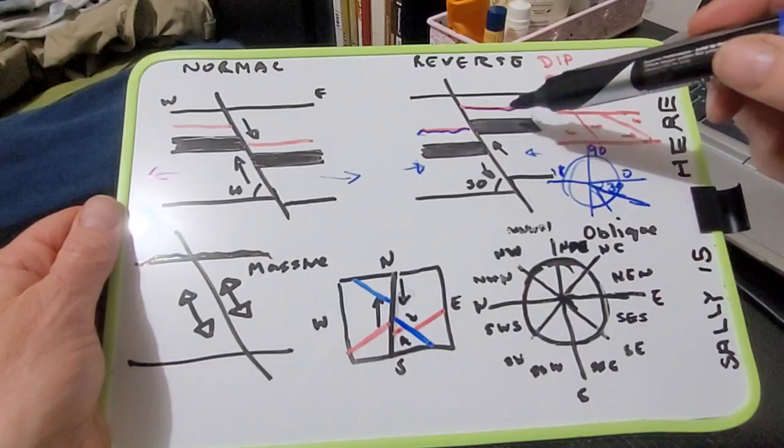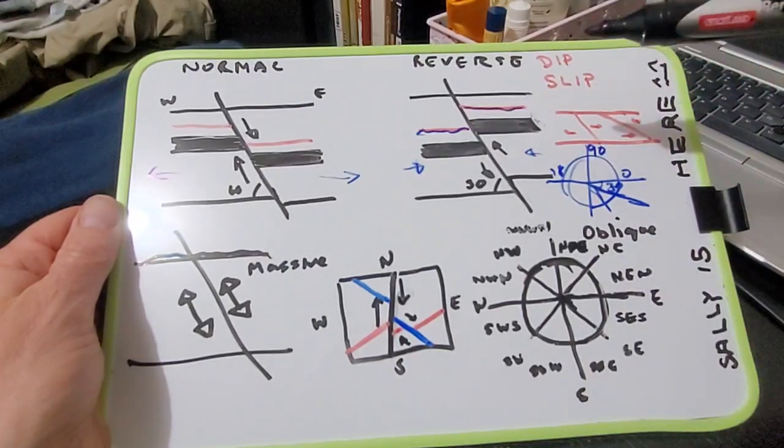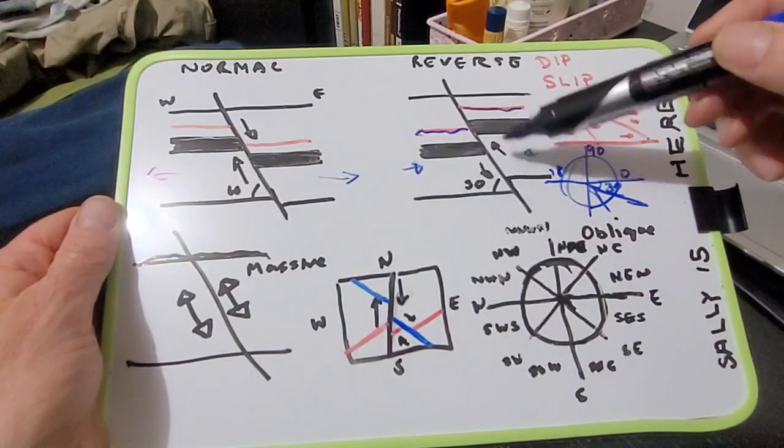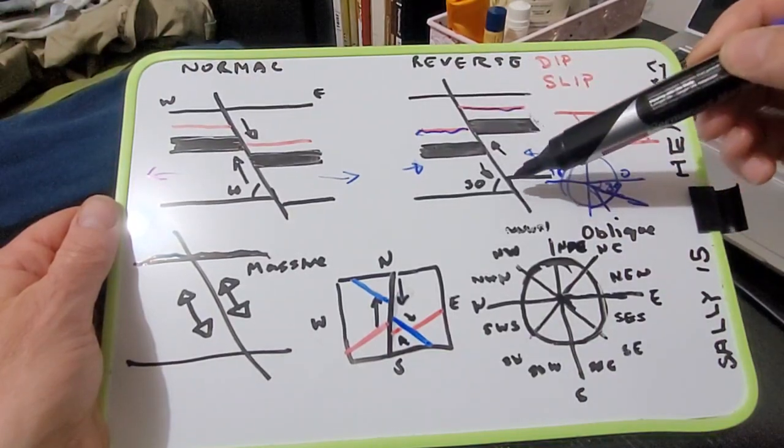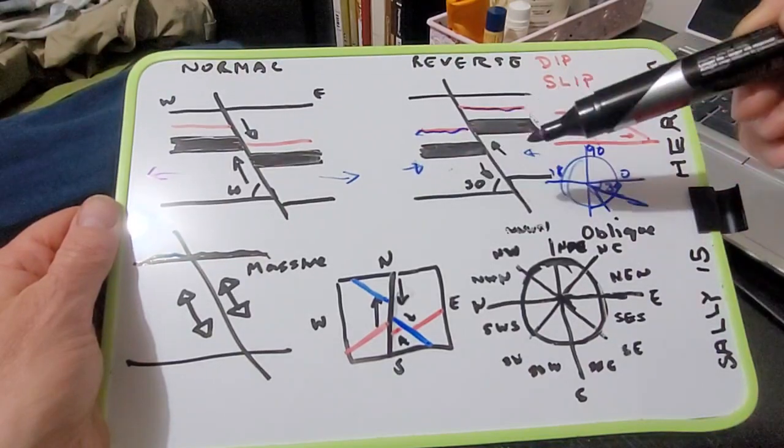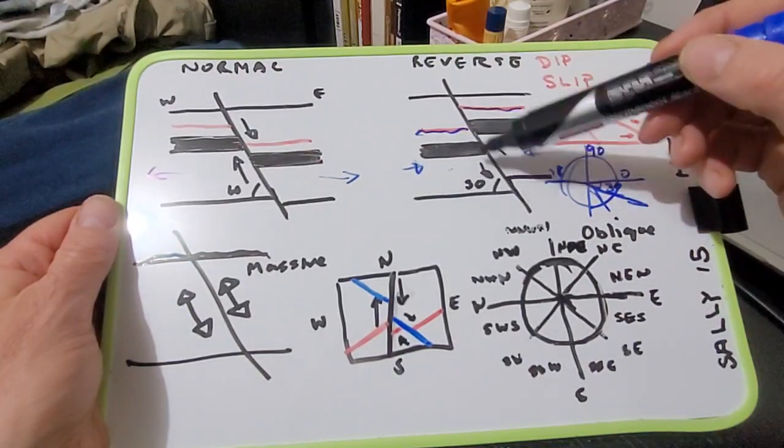So obviously, on the right side, it's moved up. So that's the hanging wall, because of the angle of the actual fracture. And the left side is the foot wall. And that's moved down.